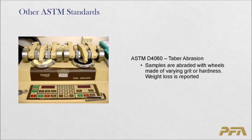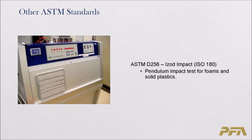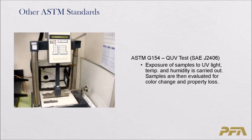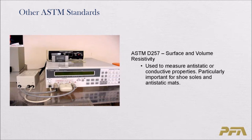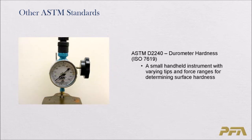ASTM D4060 is Taber abrasion — samples are abraded with wheels of varying grit or hardness and weight loss is reported. Izod impact is a pendulum impact test for foam and solid plastic. ASTM G154 covers UV test exposure of samples to UV light, temperature, and humidity; samples are then evaluated for color change and property loss. ASTM D257 covers surface and volume resistivity, used to measure anti-static or conductive properties, particularly important for tools and anti-static mats.